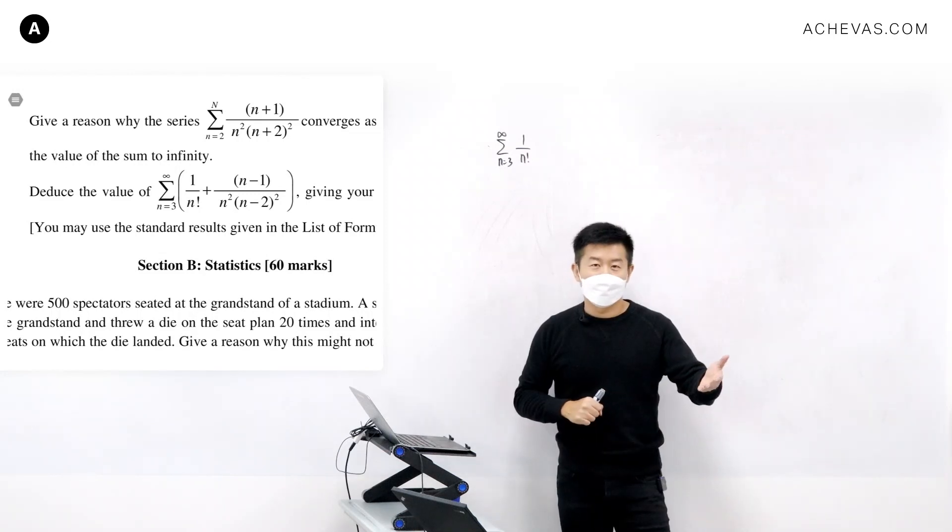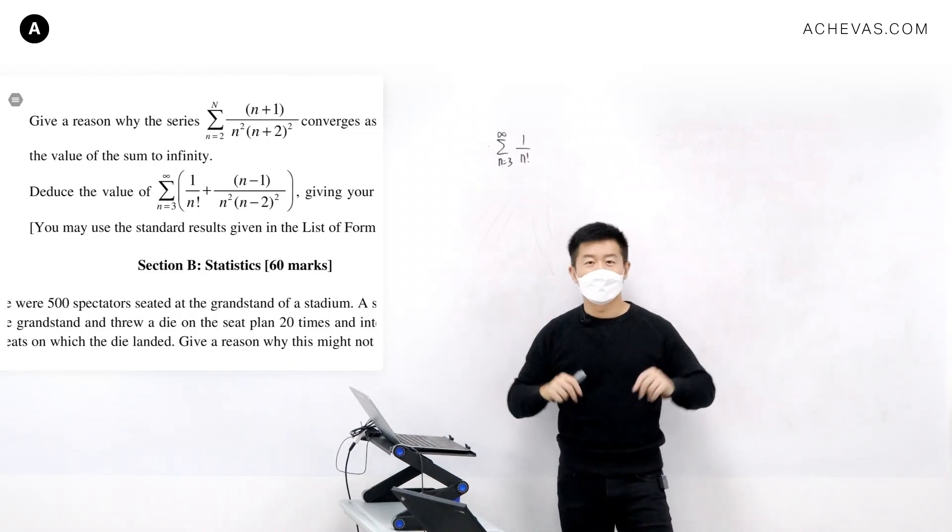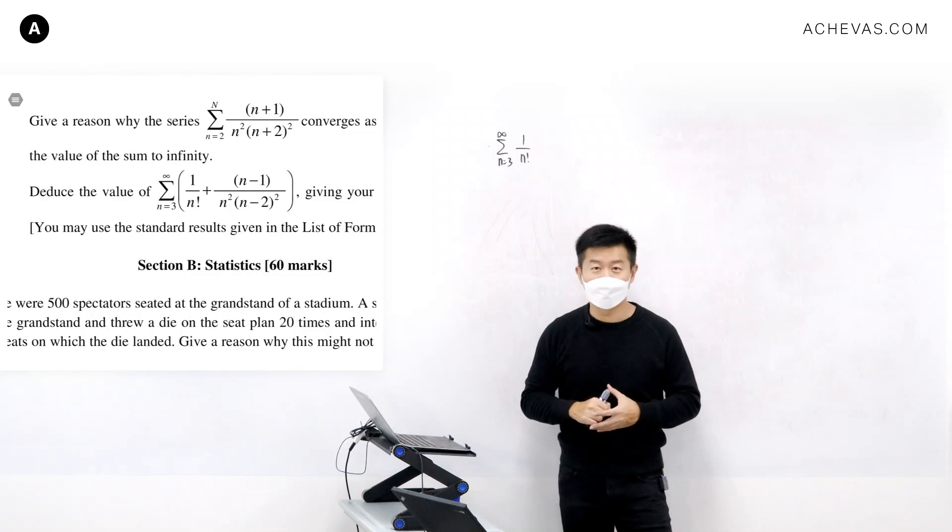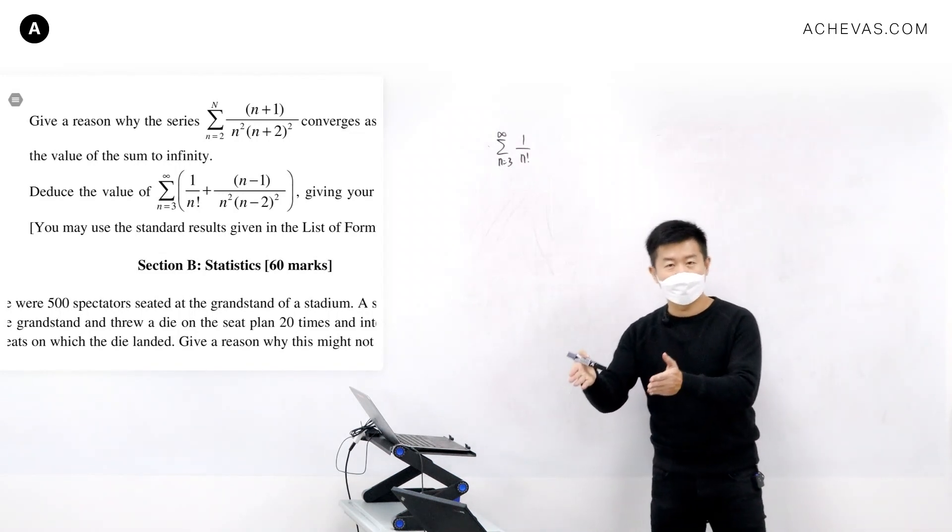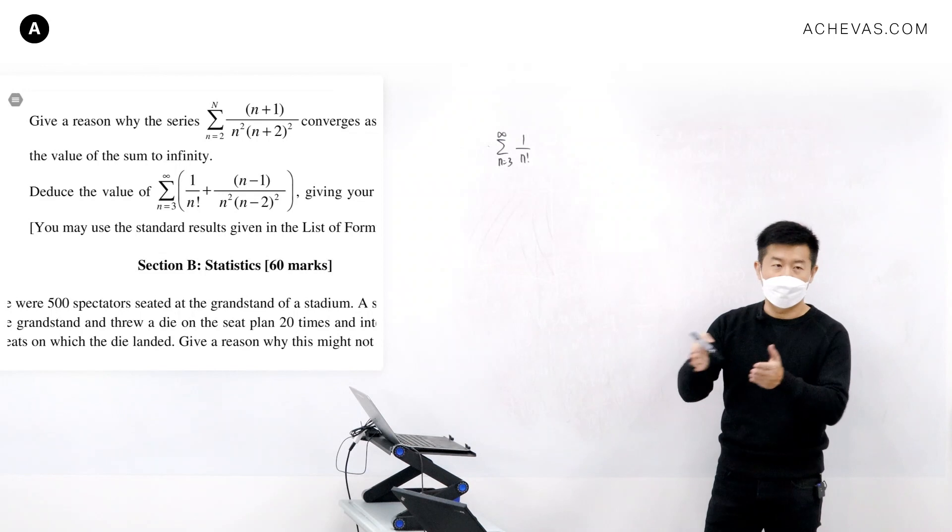It is those students who acknowledge this kind of secret perspective that got the bonus. Otherwise, it's very difficult to do this question. You know why? Because this question here cannot be done by either using the sigma rule nor pattern recognition.